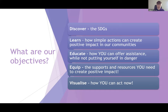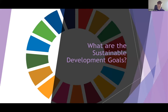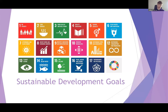What are the Sustainable Development Goals? The Sustainable Development Goals, or SDGs, also known as the Global Goals, were adopted by all United Nations Member States in 2015 as a universal call to action to end poverty, protect the planet, and ensure that all people enjoy peace and prosperity by 2030. The SDGs are integrated — they recognise that action in one area or goal will affect outcomes in others, and that development must balance social, economic, and environmental sustainability.